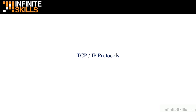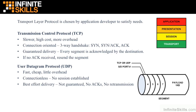In this lesson we're going to take a look at the TCP/IP suite of protocols. At layer 4 of the OSI model, we find two of our primary protocols used on all corporate networks and across the internet as well. And they are the Transmission Control Protocol, TCP, and the User Datagram Protocol, UDP.